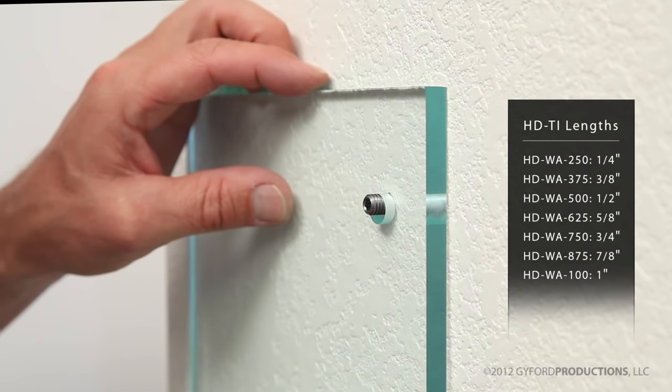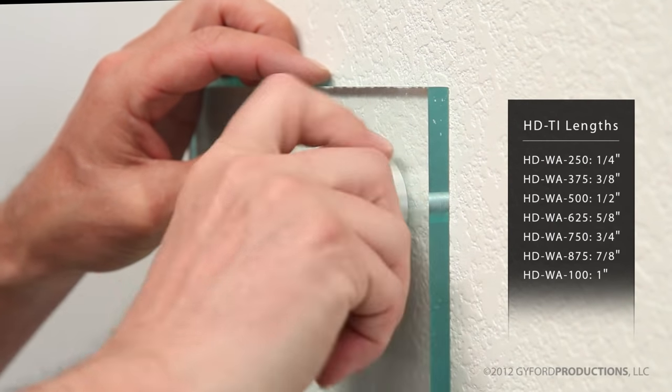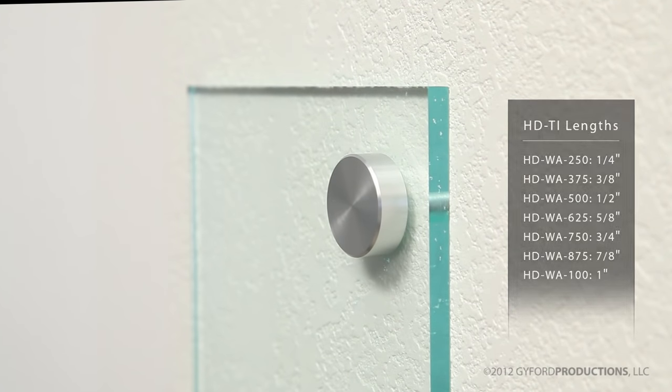The various lengths allow flush mounting of material with different thicknesses and the use of shorter barrels in layered systems when dimensions get critical.